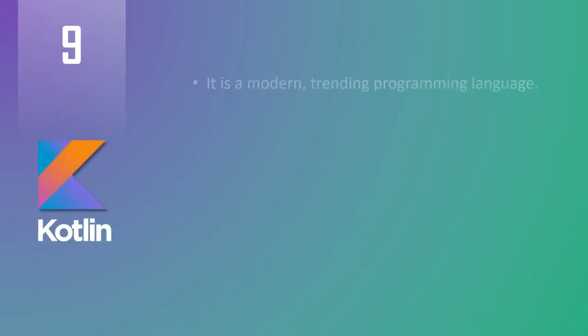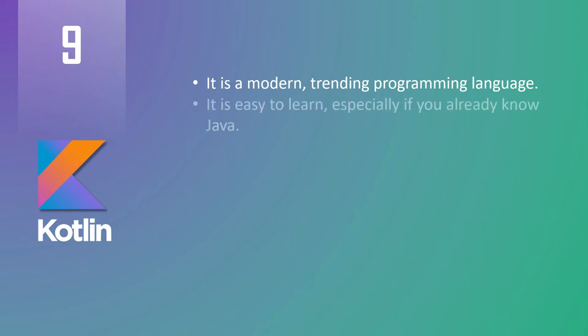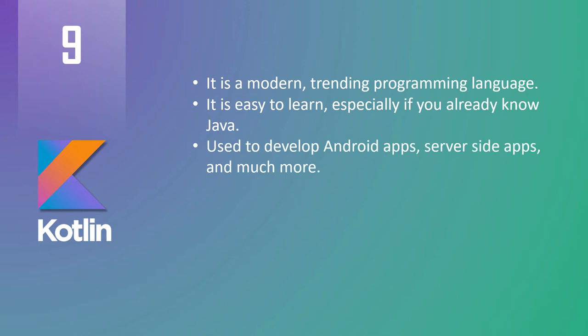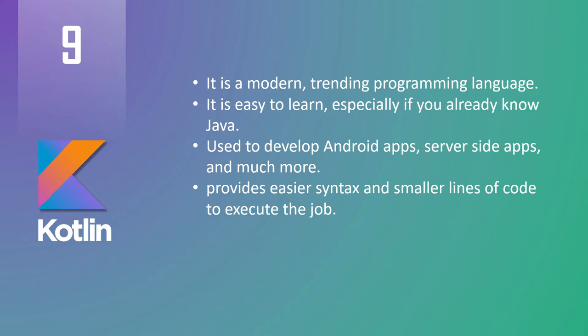At number nine we have Kotlin. Kotlin is a modern, trending programming language. Kotlin is easy to learn, especially if you already know Java. It is used to develop Android apps, server-side apps, and much more. Google has officially announced Kotlin to be their first class language for Android development. Kotlin provides easier syntax and smaller lines of code, and is a platform-independent, general-purpose programming language intended to run on the JVM.